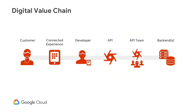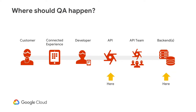Let's look at the digital value chain again. Consider where quality assurance should be implemented. In most organizations, we quickly identify the technical areas. Your back-end servers and APIs must be clear of defects to ensure you are generating great and quality digital experiences. However, focusing solely on protecting code integrity is only the start of a quality assurance strategy.